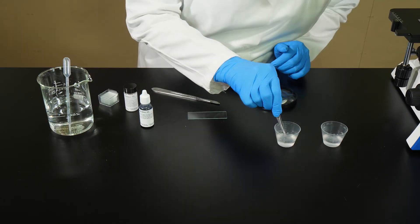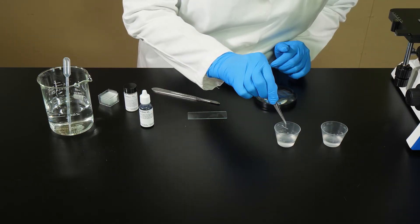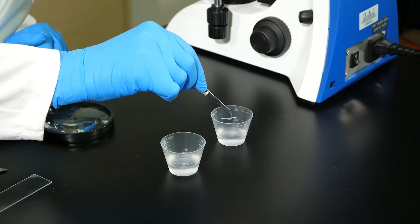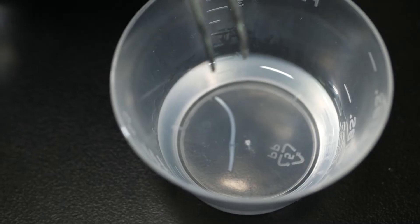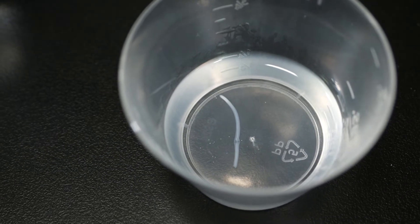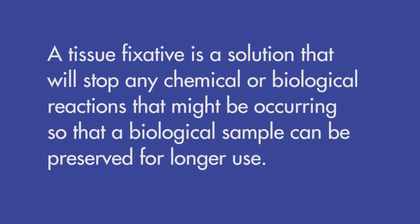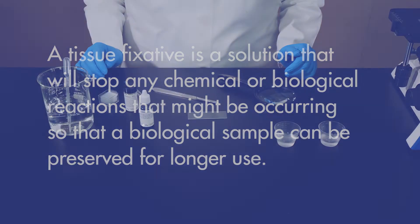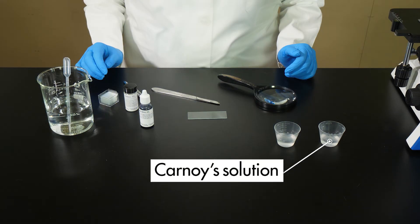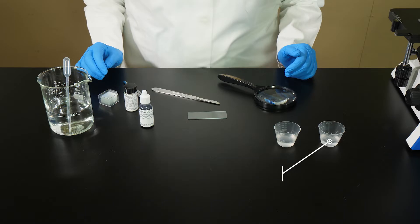After four minutes, we remove the sample from the hydrochloric acid and transfer it to a container with a tissue fixative. A tissue fixative is a solution that will stop any chemical or biological reactions that might be occurring, so that a biological sample can be preserved for longer use. The fixative we are using is Carnoy's solution. The onion root tip must soak in Carnoy's solution for four minutes.